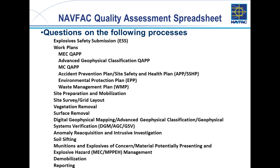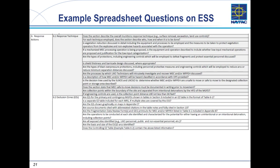Another tool to help ensure quality on our sites is the NAVFAC Quality Assessment Spreadsheet. It has a series of questions on the following processes: the explosive safety submission, work plans, QAPs for MEC and MC work, munitions constituent work, site prep and mobilization, site survey and grid layout, vegetation removal, surface removal, and mapping — essentially a laundry list of items. There are over 150 questions just on the explosive safety submission alone.